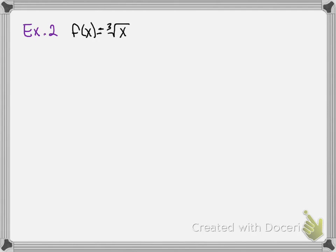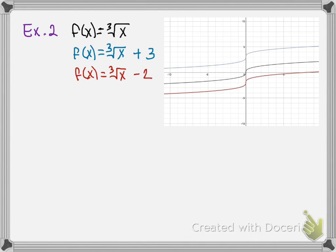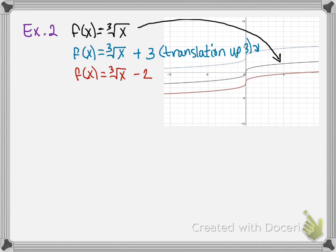Let's look at some more examples, always comparing back to the parent function f of x equals the cube root of x. We'll also look at f of x equals the cube root of x plus 3, and f of x equals the cube root of x minus 2. Here are these three graphs. The parent function is this black function. f of x equals the cube root of x plus 3 is a translation up 3, shown by this blue function. And f of x equals the cube root of x minus 2 is a translation down 2 units, shown by this red function.